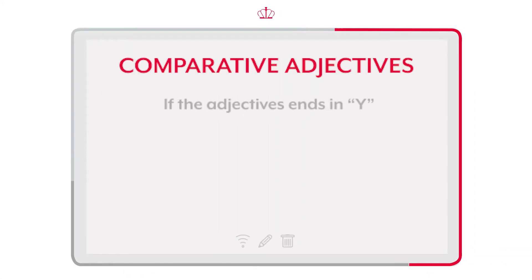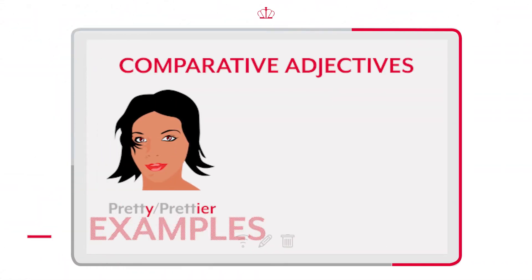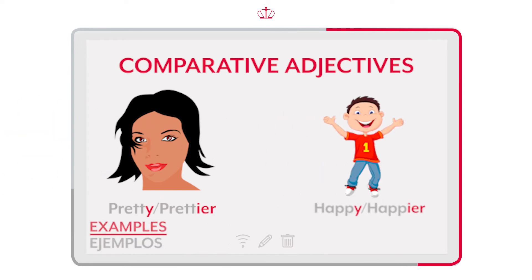Quick rule: if the adjective ends in 'y', we have to drop the 'y' and add '-ier' for grammatical purposes. Regla rápida: si el adjetivo termina con una 'y', tenemos que quitar la 'y' y agregar '-ier'. For example: pretty, prettier. Happy, happier.